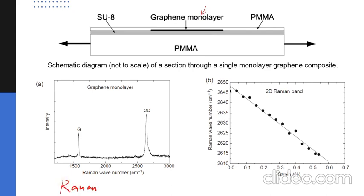Even without loading, graphene monolayers show a typical Raman pattern with a G peak and a 2D peak. Scientists have found that once you stretch it, the 2D peak shifts. There's a linear relationship: applying a larger strain causes a larger shift in the Raman wave number. So by measuring the Raman shift, you can determine the strain of the graphene fiber.